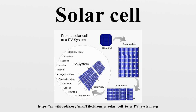The photovoltaic effect was experimentally demonstrated first by French physicist Edmund Becquerel. In 1839, at age 19, he built the world's first photovoltaic cell in his father's laboratory. Willoughby Smith first described the effect of light on selenium during the passage of an electric current in a 20 February 1873 issue of Nature. In 1883, Charles Fritz built the first solid-state photovoltaic cell by coating the semiconductor selenium with a thin layer of gold to form the junctions. The device was only around 1% efficient.